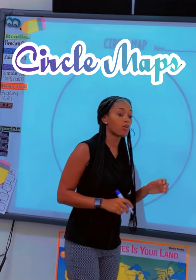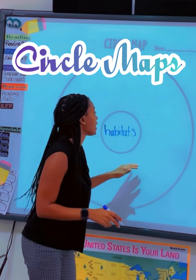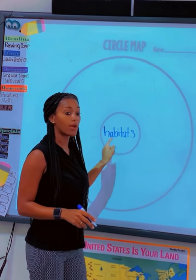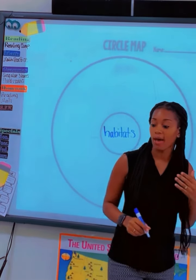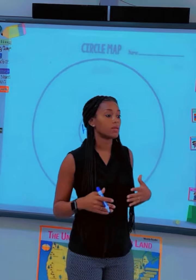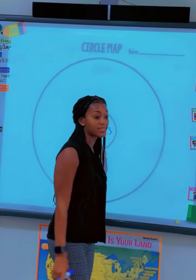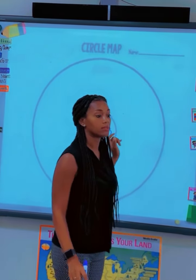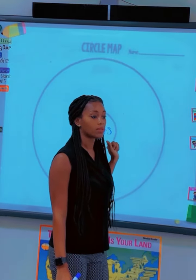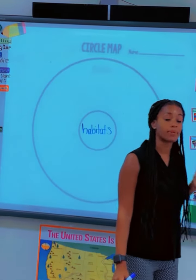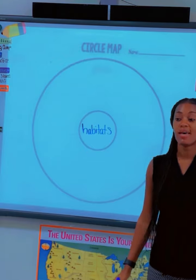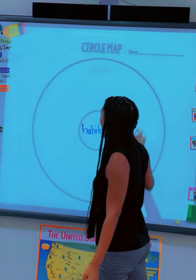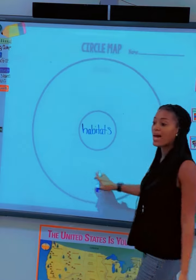Today, class, we are going to be using a circle map to learn about habitats. Very good. So on your desk, we have been reading about... Before we begin, who can tell me what a habitat is? Yes? A habitat is a place where plants and animals live. Absolutely. It's a place where plants and animals live. Now I want somebody to tell me, what can we put about habitats on the outside here?